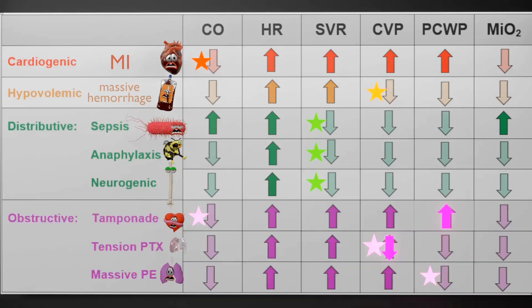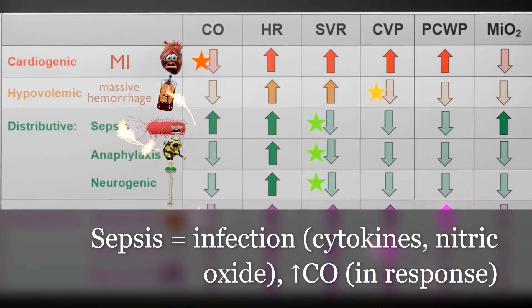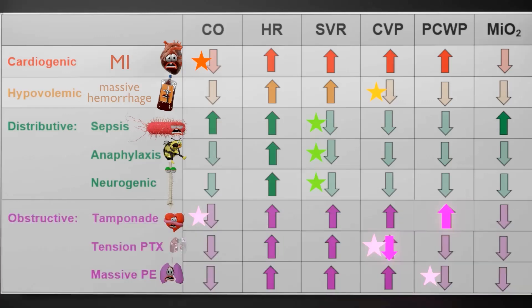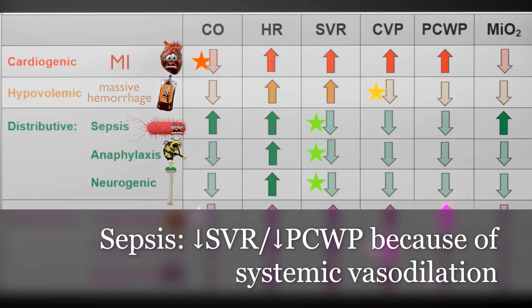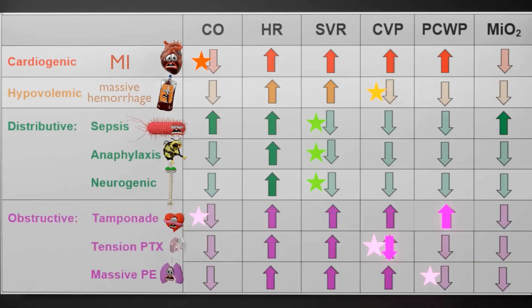In sepsis, there's massive vasodilation in response to infection, due to the release of cytokines by white blood cells trying to fight off the infection, and nitric oxide release from the endothelial cells. In septic shock, cardiac output will be increased because the body wants to address the infection, and heart rate will also increase — that's why people in sepsis have tachycardia. Central venous pressure and pulmonary capillary wedge pressure will be decreased due to the systemic vasodilation. Mixed venous oxygen saturation will actually be increased in septic shock.